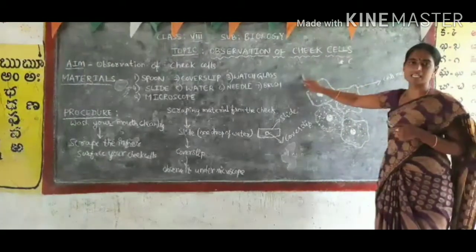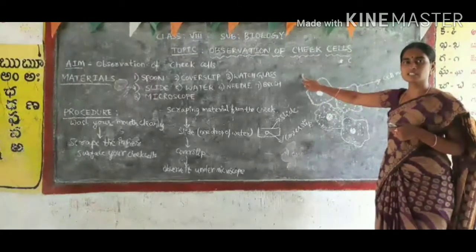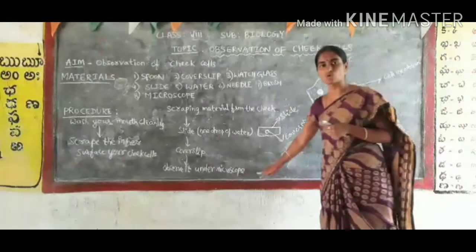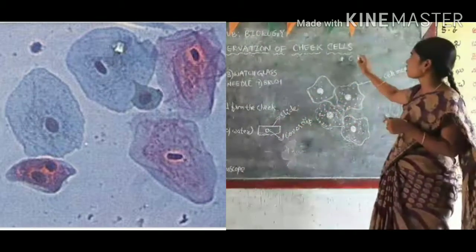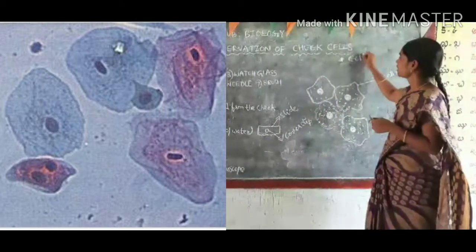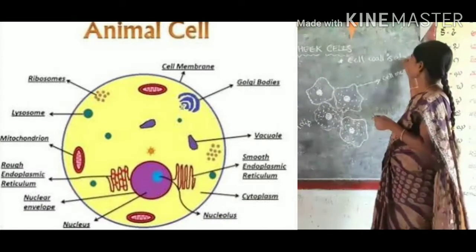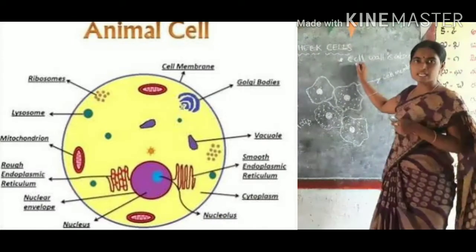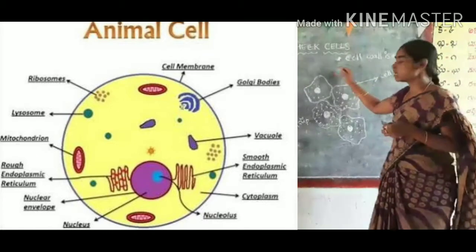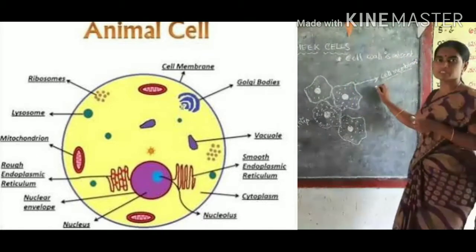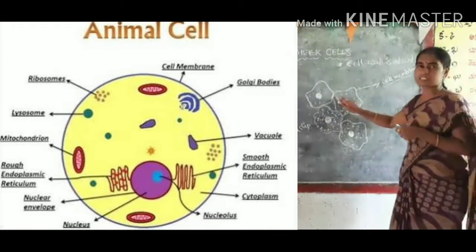But in the case of cheek cells, it is an animal cell. If you observe under a microscope, you will notice that there is no cell wall. Please remember that in an animal cell, cell wall is absent. Instead of a cell wall, only a cell membrane is present in an animal cell.